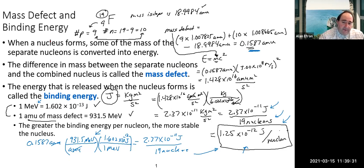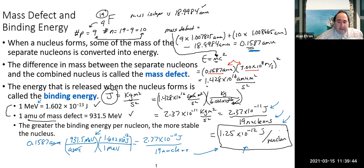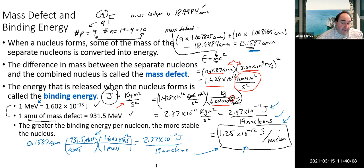At that point you can put the mass defect into Einstein's equation, giving a result in units of amu·m²/s². Since a joule is kg·m²/s², we do a conversion using Avogadro's number (×10²⁶) to get from amu to kilograms, which gives us units of joules. That's how we go from the mass defect to energy in joules.